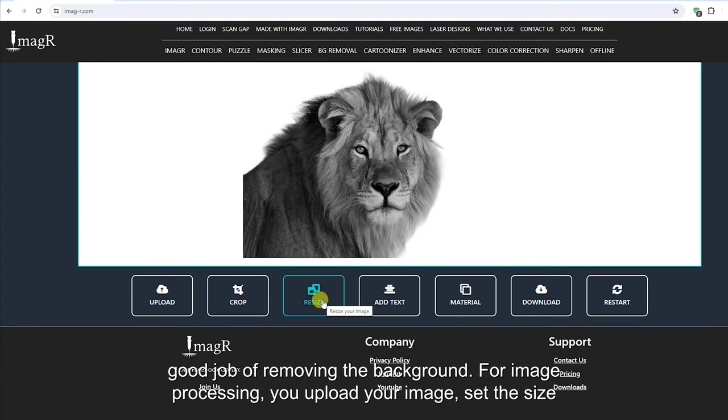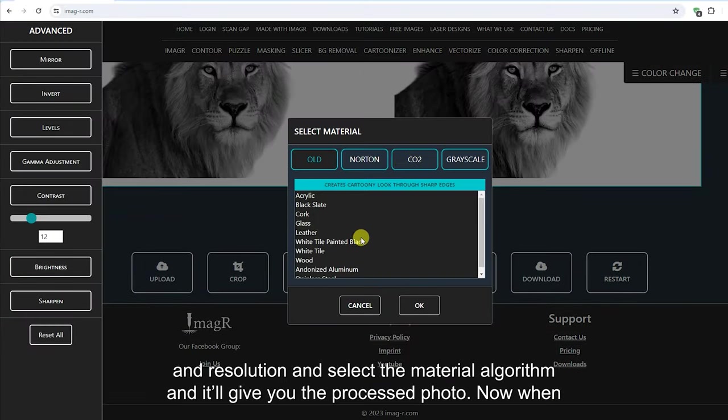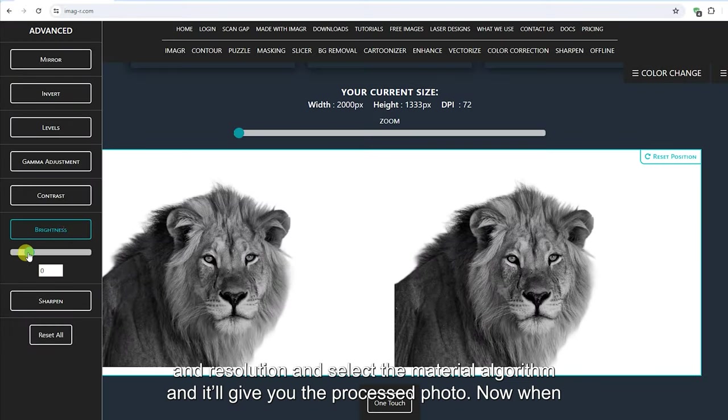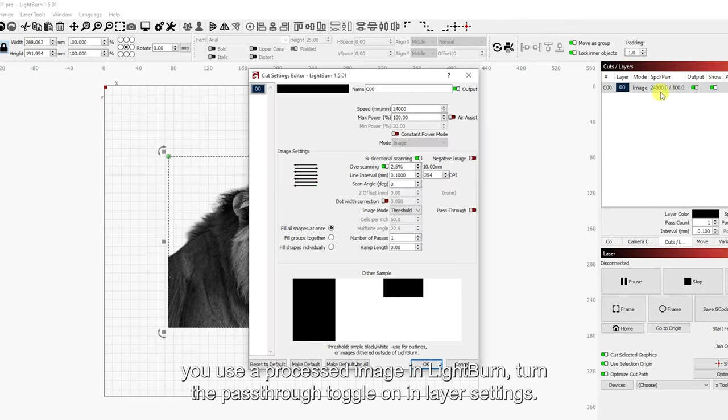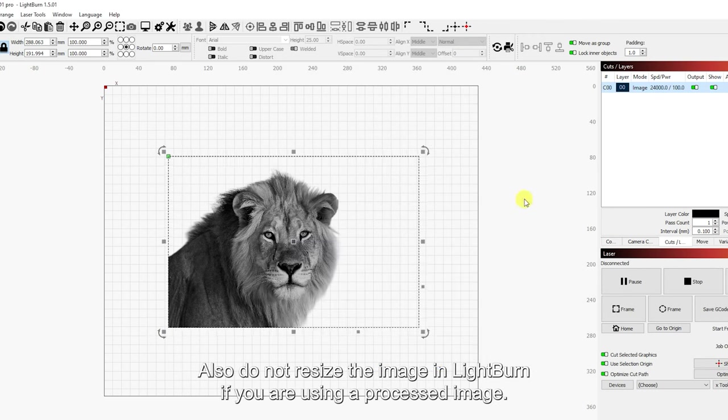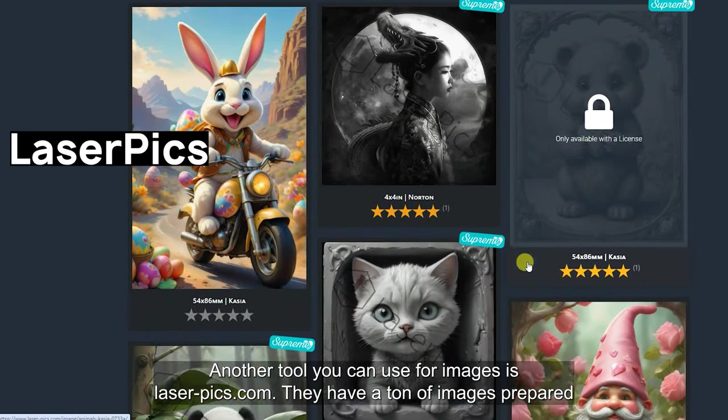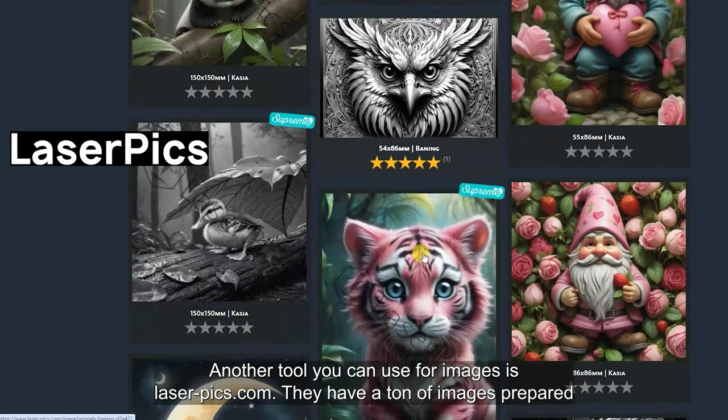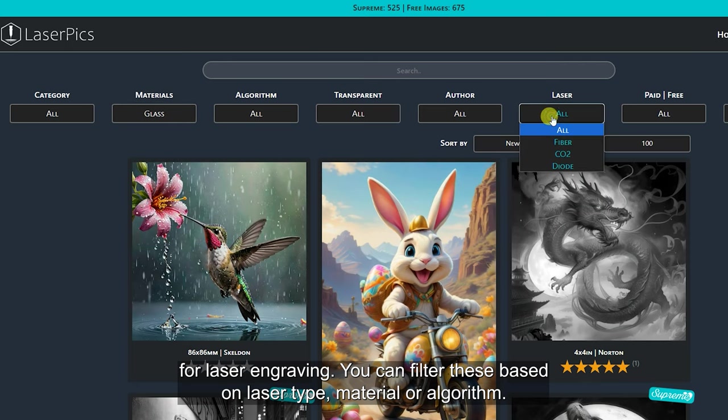For image processing, you upload your image, set the size and resolution, and select the material algorithm and it will give you the processed photo. Now when you use a processed image in LightBurn, turn the passthrough toggle on in layer settings. Also do not resize the image in LightBurn if you are using a processed image. Another tool you can use for images is laserpix.com. They have a ton of images prepared for laser engraving. You can filter these based on laser type, material, or algorithm.